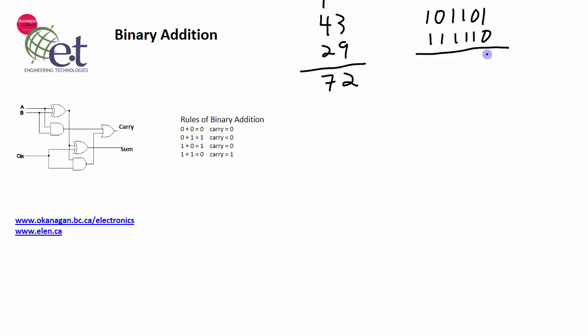So 1 plus 0 is 1, 0 plus 1 is 1, 1 plus 1 is 2, but in binary that's 10, which can't be represented in a single column. So we have a 0 here, and we carry the 1 over into the next column.